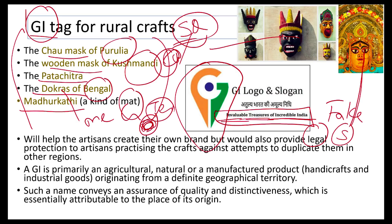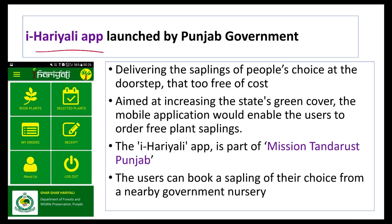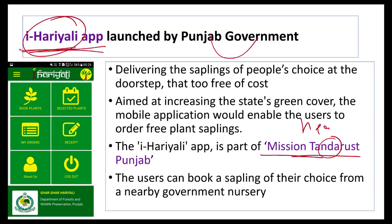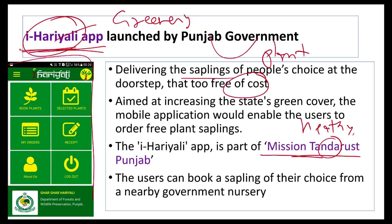The Punjab government launched the iHariyali mobile app under Mission Tandrust ('Tandrust' meaning healthy, 'Hariyali' meaning greenery). Through this app, you can order a plant of your choice free of cost and collect it from a nearby government nursery.